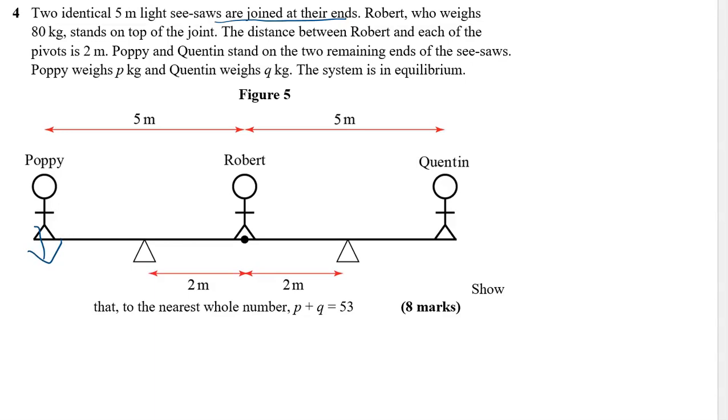Obviously, we can put some forces on now. We've got Poppy, so PG, because she weighs P, and Quentin weighs QG. We've got the reaction forces here, we'll call this R1 and R2, for the reaction forces there. And then what do we do about Robert? Now, one idea is that, well, everything's symmetrical. So five meters there, five meters there, two away from both sides.